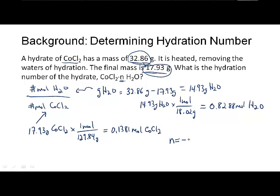So N equals the moles of water per mole of cobalt chloride, so it equals 0.8288 moles of water over 0.1381 moles of cobalt chloride. That was what we had here. When you divide, it's 6.